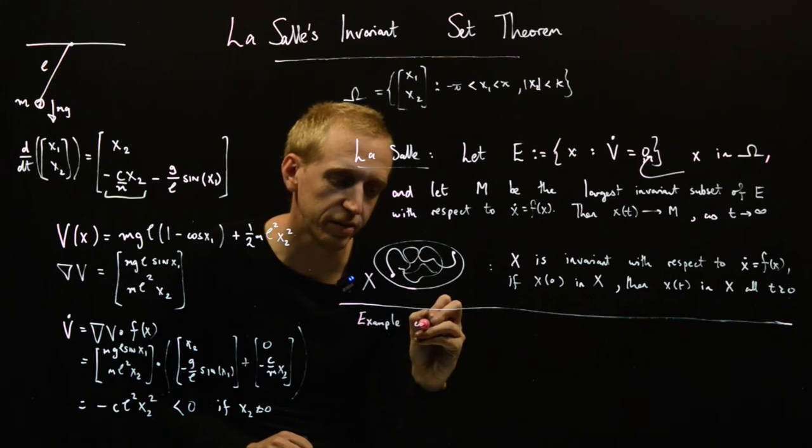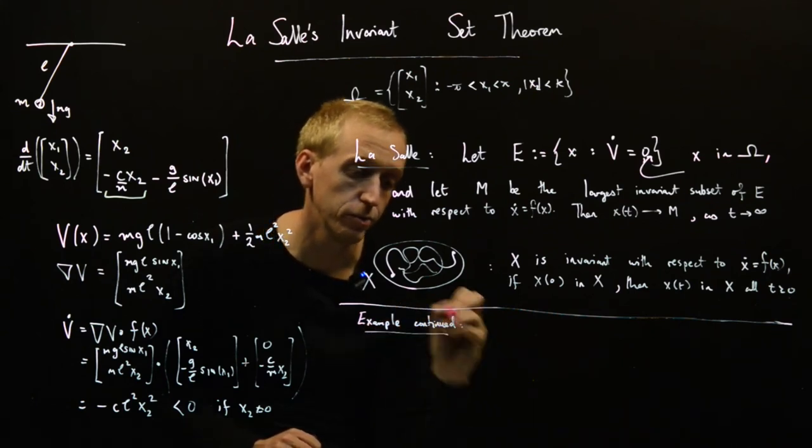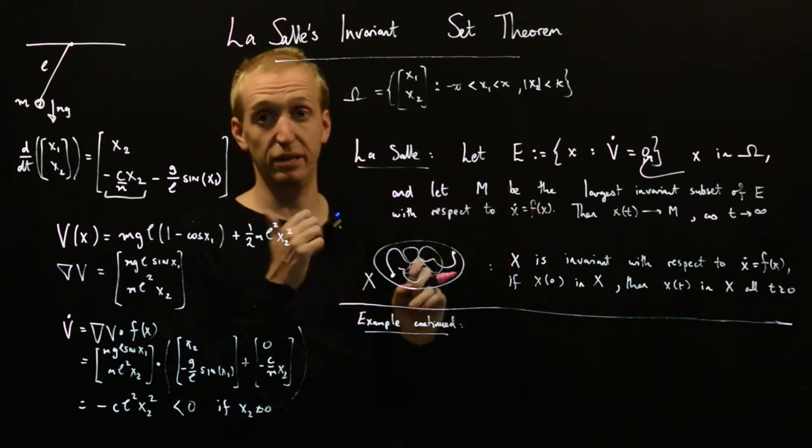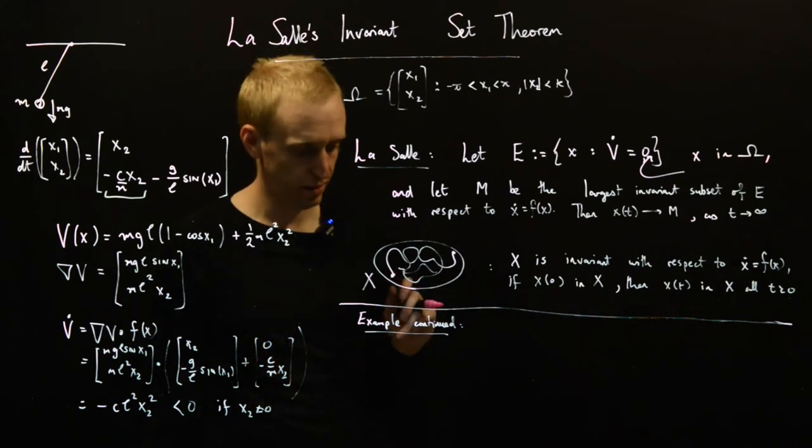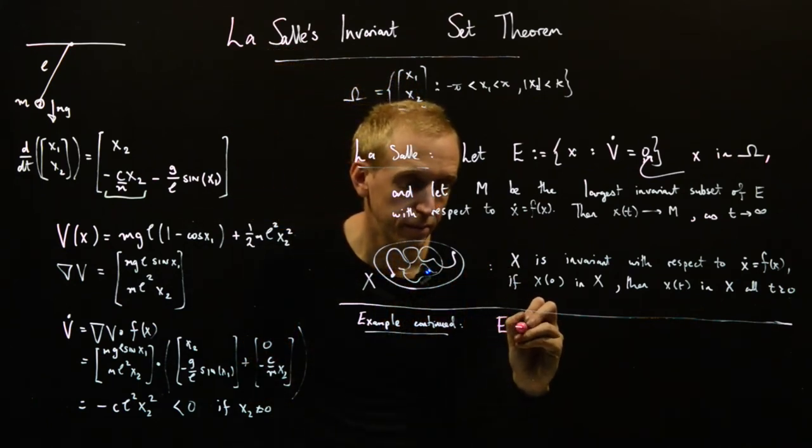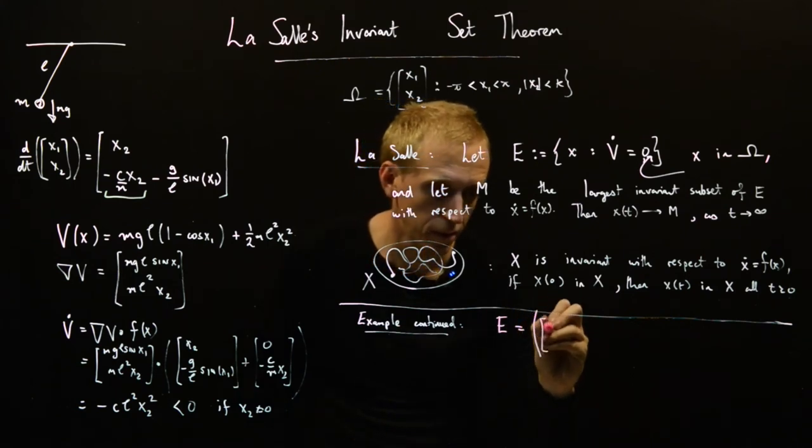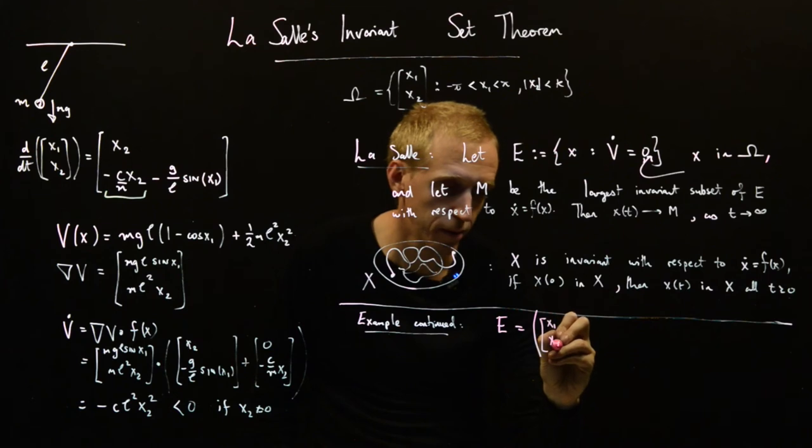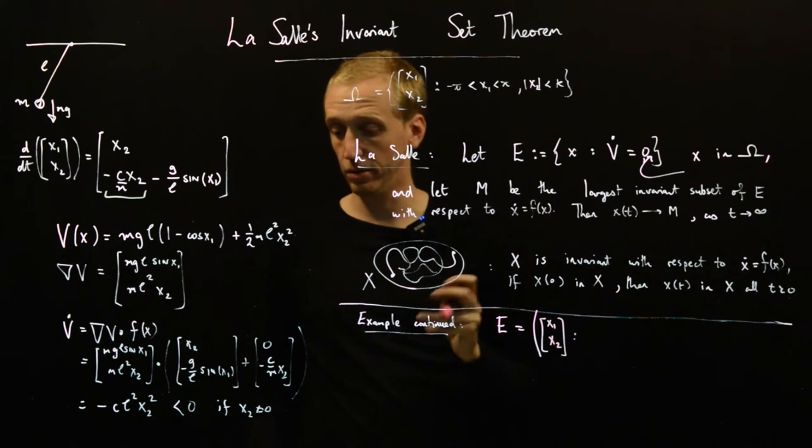So here we have our system and our Lyapunov function. This is all the stuff on the LaSalle Invariant Set Theorem. Now let's do our example continued. So to apply this, the first thing we need to do is find E, and the second thing we need to do is find M. So what is E? E is just equal to the set of points x1, x2 such that V dot is equal to zero.